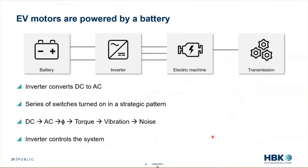We would love to power our motors on the purest of AC signals, but EV motors have to be powered by battery. There's no AC energy storage, and batteries store DC electrical power. So how do we get from DC to AC? We have a clever piece of circuitry called an inverter, which takes that DC voltage and current and, using a series of switches turned on and off in a strategic pattern, replicates an AC sine wave.